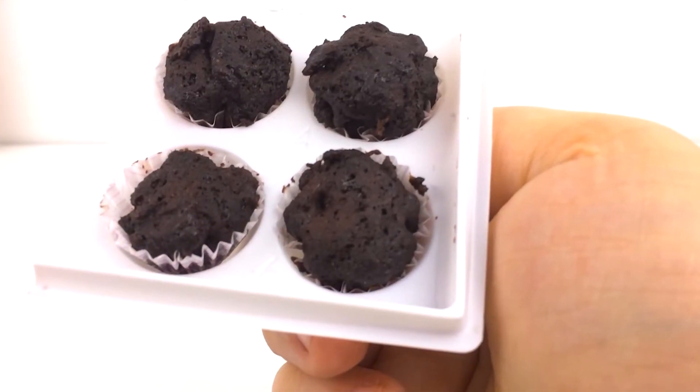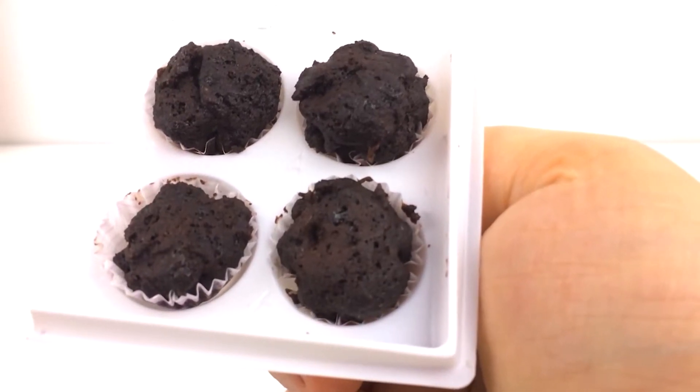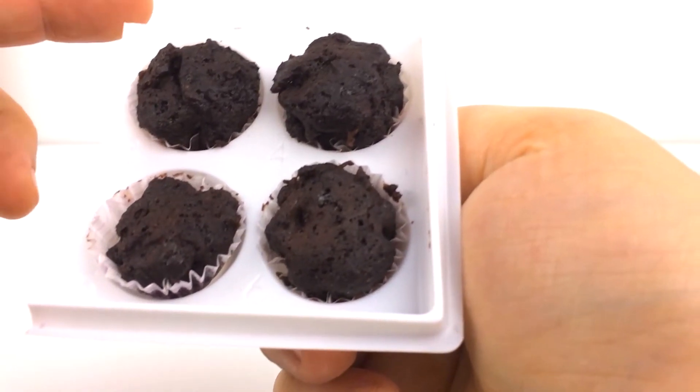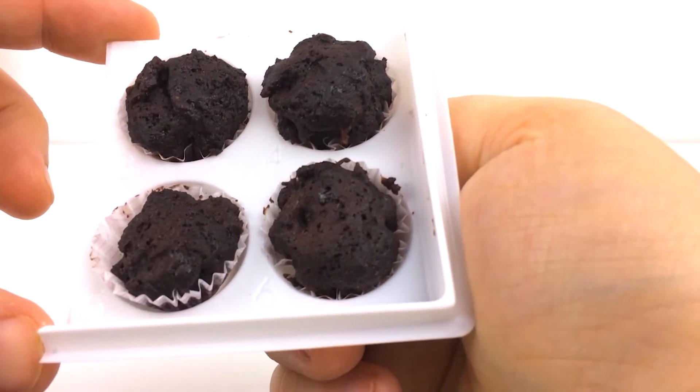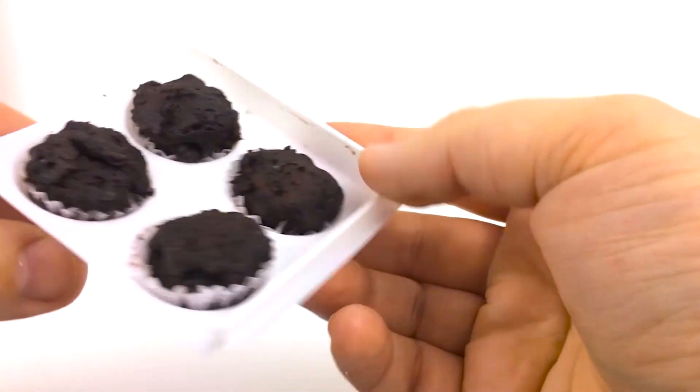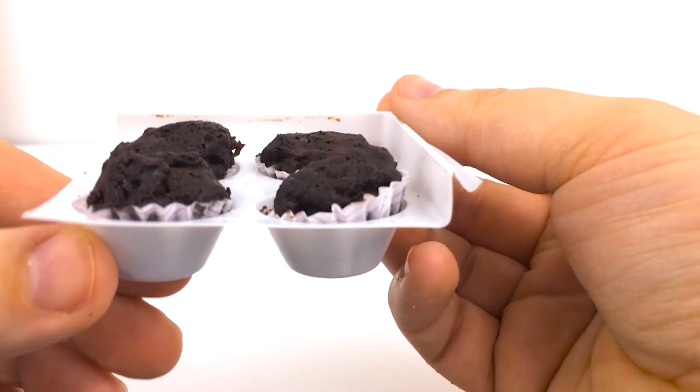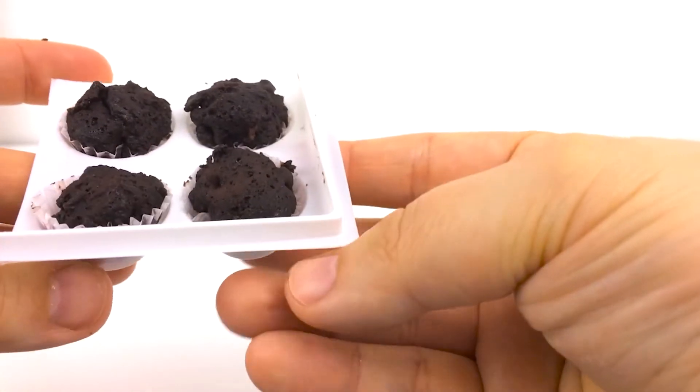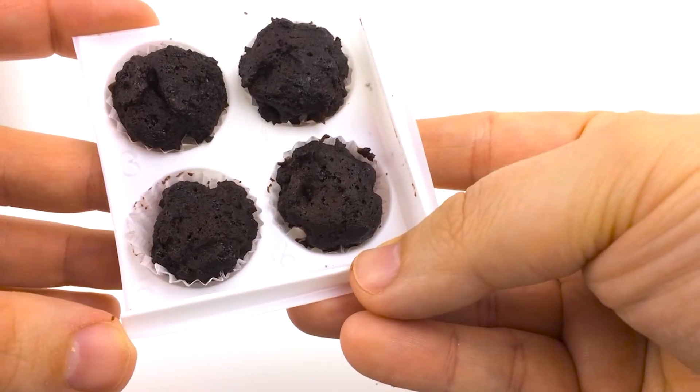Okay, so these are our little cupcakes fresh out of the microwave. I put it on for 15 seconds because I didn't think 20 was needed. 20 might have been too much. So they kind of rose a little bit. And they do smell like chocolate cake, so that's something. So we'll get the frosting.